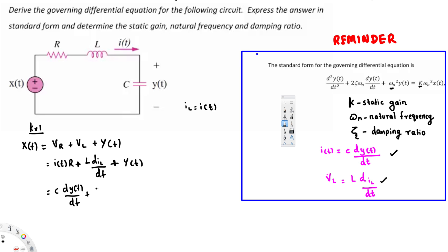Substituting I(t) = C · dY/dt into the inductor term gives L · d²Y(t)/dt². Multiplying through, we get: LC · d²Y(t)/dt² + RC · dY(t)/dt + Y(t) = X(t). This is a second-order differential equation, but not yet in standard form because of the LC coefficient on the second-order term.